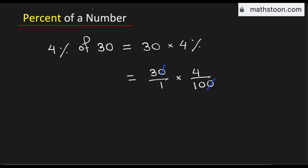We have 3 times 4 in the numerator, which is 12, and in the denominator we have 1 times 10, which is 10. This is the same as 1.2. Therefore, 4% of 30 is equal to 1.2, and this is our final answer.